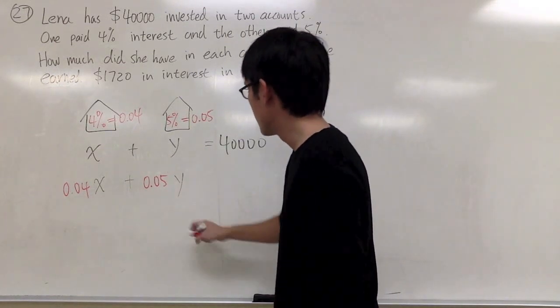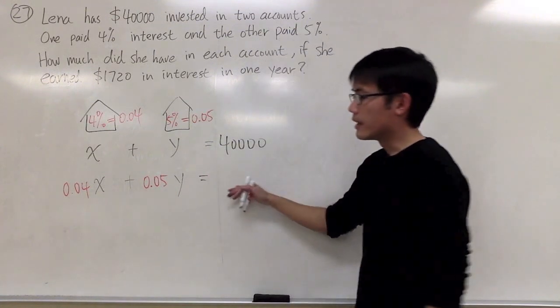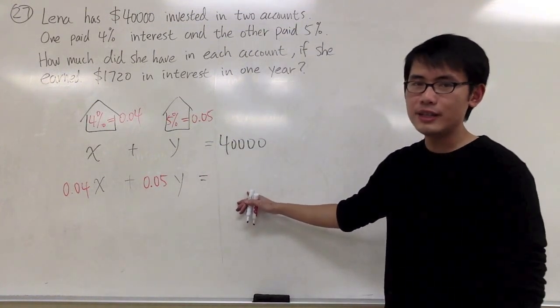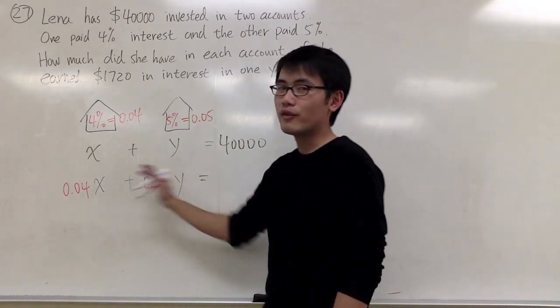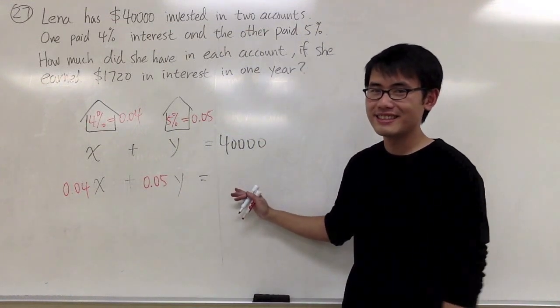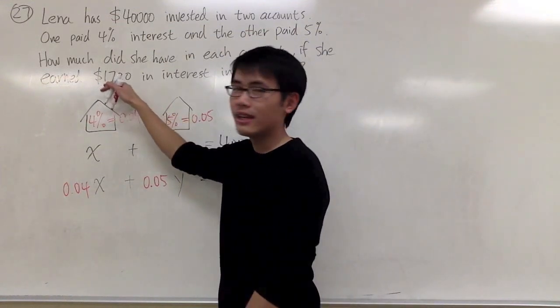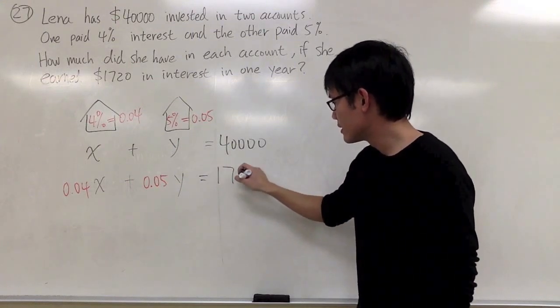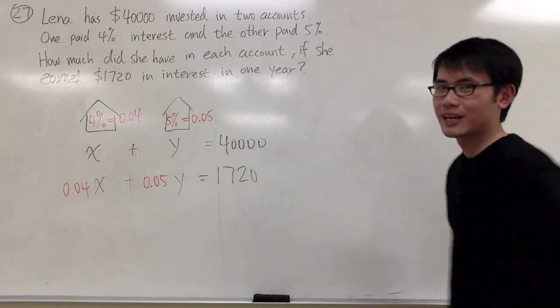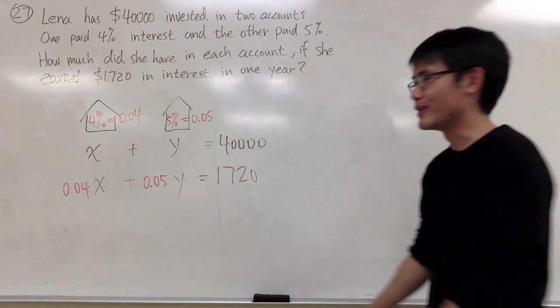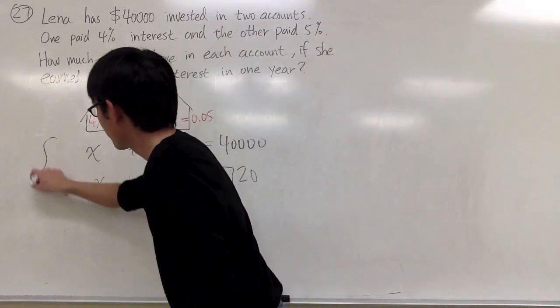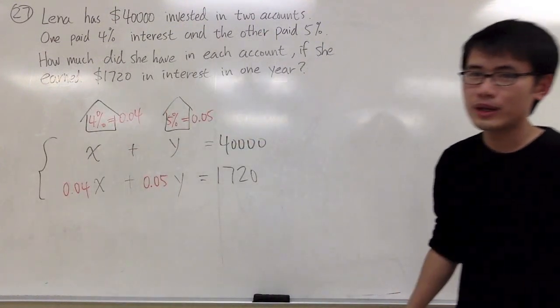I will take 0.05 times how much money I put in for the second account, times y. And that should be, this right here is how much money we can make from both accounts in terms of the interest, which is $1,720. And this is how we come up with two equations with two unknowns. This is the equation that we're going to work with.